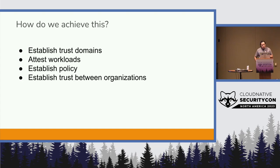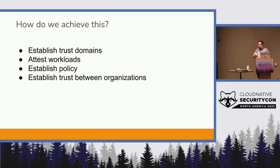When we talk about workloads and how to establish workload identity in a Zero Trust environment, these are the basic steps. You have to establish what's called a trust domain — think of it as a set of things that belong to the same family of services, like an application or a business unit. You attest to the workloads inside of it, establish policy for how they communicate with each other, and then federate and establish trust across trust domains.